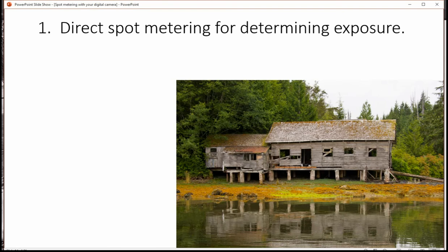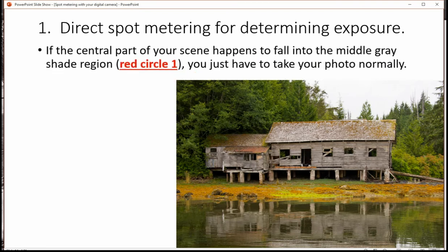The first method that we talked about was direct spot metering for determining exposure. The idea here is that where the spot meter meters from, that's the central part of your focusing screen. If it happens to fall into the middle gray shade region, that's red circle one on the picture there, you can take the photograph normally. Put the center spot on that gray area, take your picture, everything should come out fine.